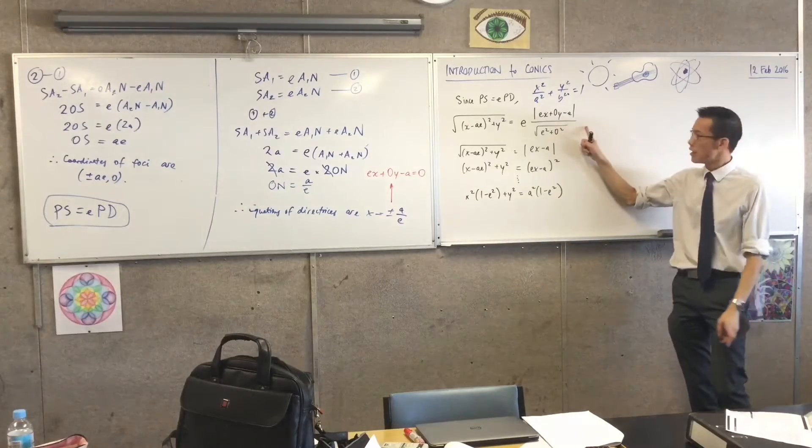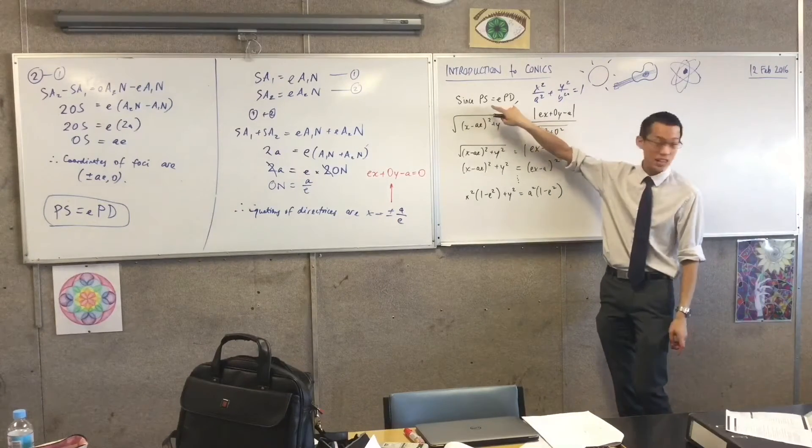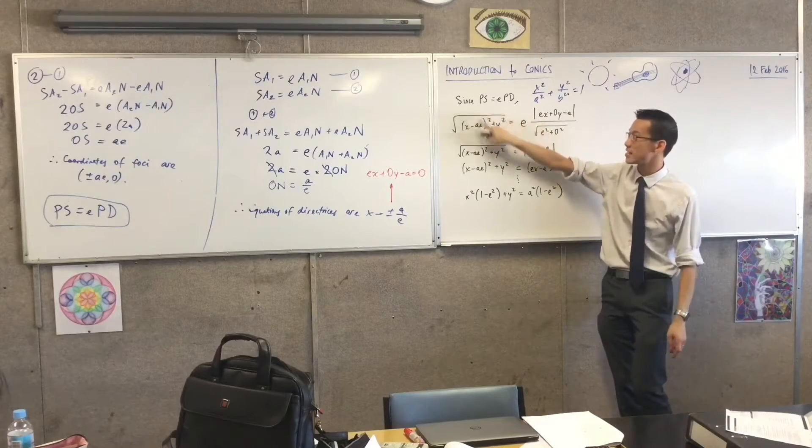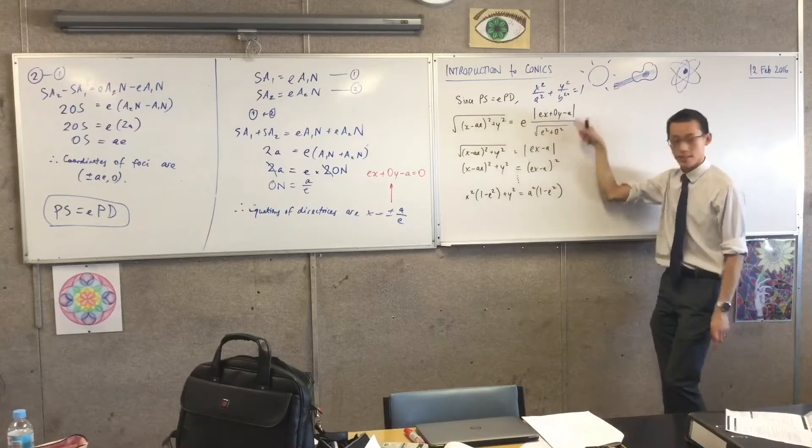So you remember I said this is where we begin. This is just the statement, the expansion out of like that distance is these two points, that distance is perpendicular one.